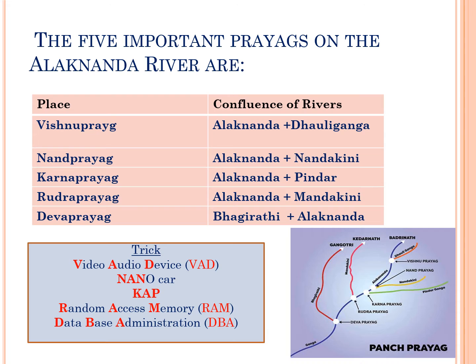The second prayag is Nandaprayag, which is a combination of Alaknanda and Nandakini. We can remember this with 'Nanokar'. The third prayag is Karnaprayag, which is a combination of Alaknanda and Pindar. We can remember it as KAP — K as Karnaprayag, A as Alaknanda, and P as Pindar.